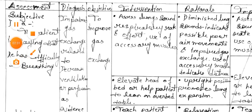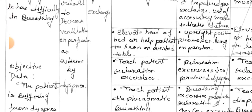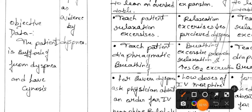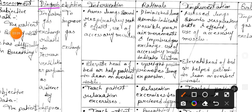Subjective data: the patient is saying that he has difficulty in breathing. Objective data: the patient is suffering from dyspnea and has cyanosis. Nursing diagnosis: impaired gas exchange related to decreased ventilation or perfusion as evidenced by dyspnea.